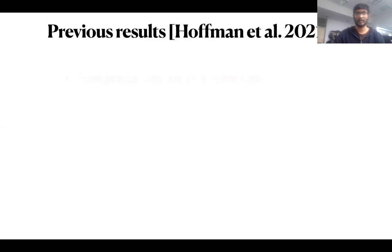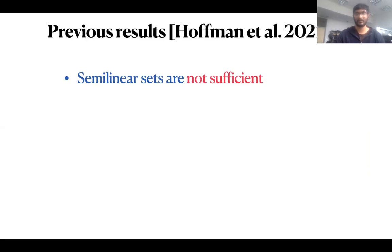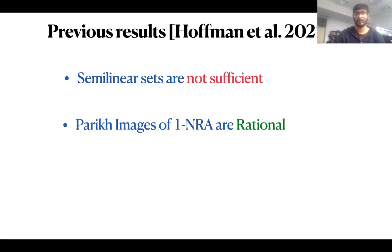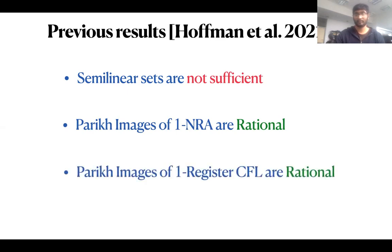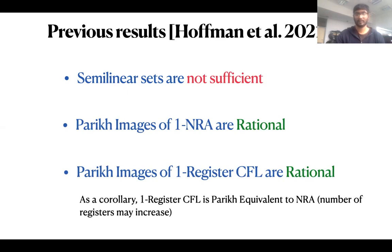Regarding previous results: in the finite case, Parikh images are semi-linear, but that is not the case here. The natural extension of semi-linear sets to the orbit-finite case is not sufficient. There exist one-register non-deterministic register automata languages which are rational but not semi-linear. It has been shown that Parikh images of one-register non-deterministic register automata are rational, and Parikh images of context-free languages with one register are also rational. As a corollary, we get a Parikh theorem that one-register context-free languages are Parikh equivalent to some non-deterministic register automata.